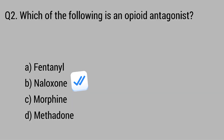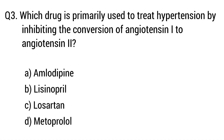Question number three. Which drug is primarily used to treat hypertension by inhibiting the conversion of angiotensin-1 to angiotensin-2? The right answer is option B: Lisinopril.